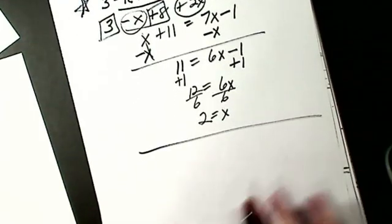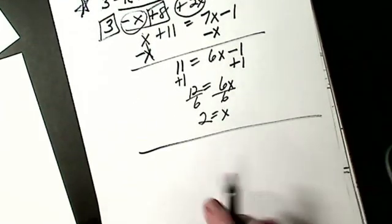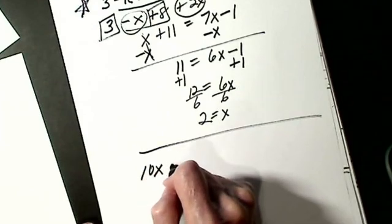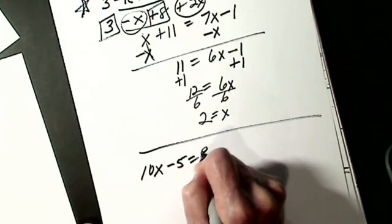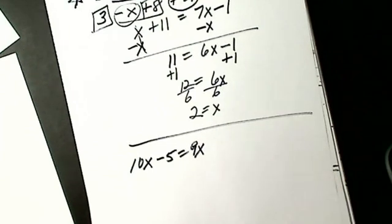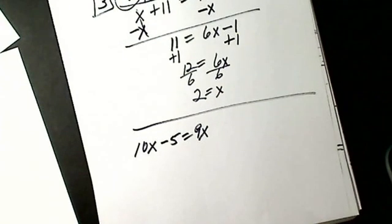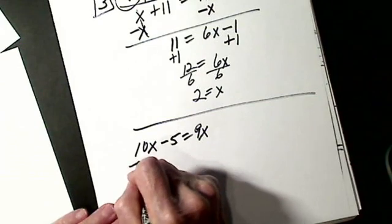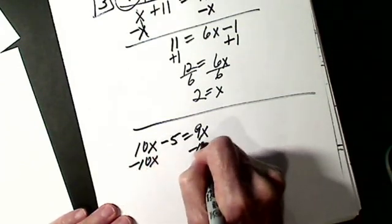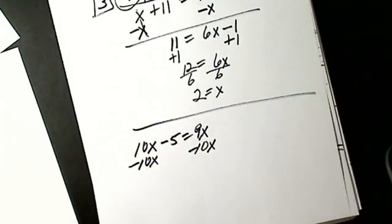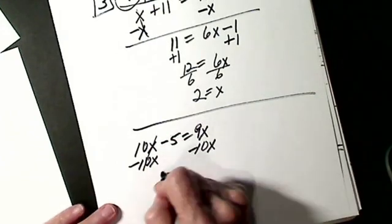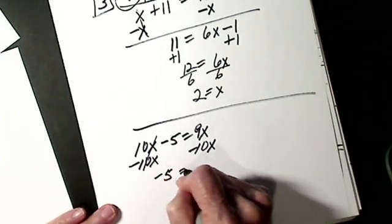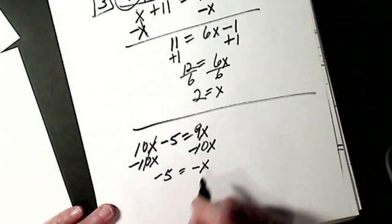The other one people get wrong is this little one. Let's say 10X minus 5 equals 9X. There are two different ways to do it. I want all my X's on one side, numbers on the other. So I could subtract 10X, subtract 10X, goes to 0. I get minus 5 equals negative X.